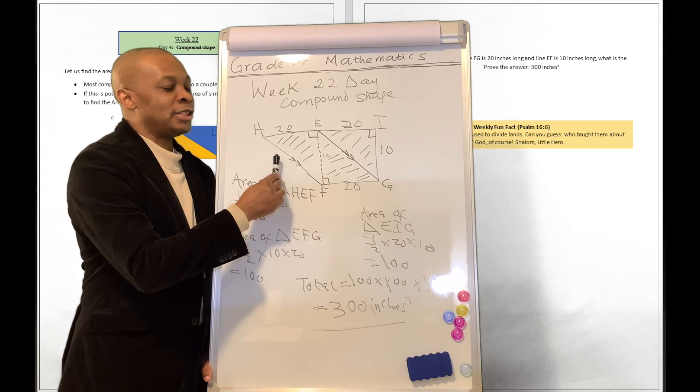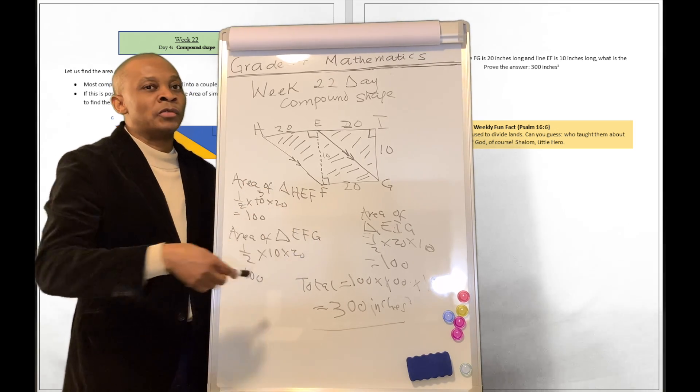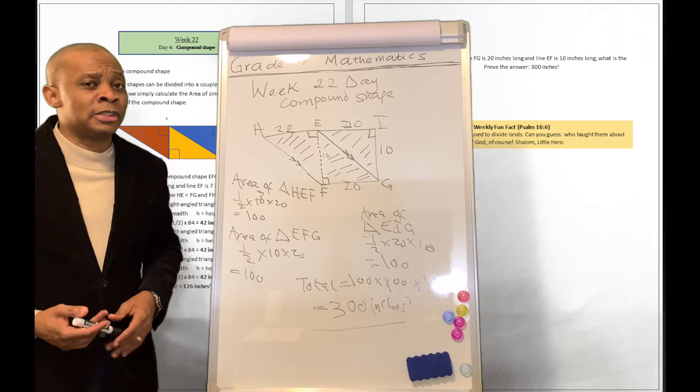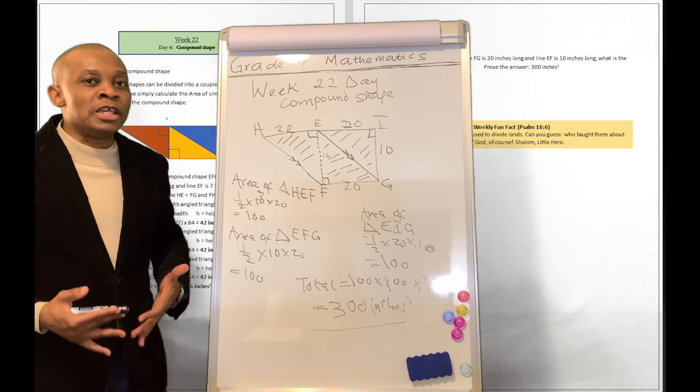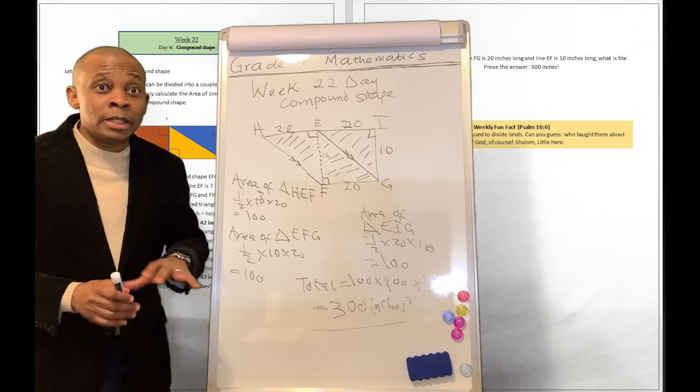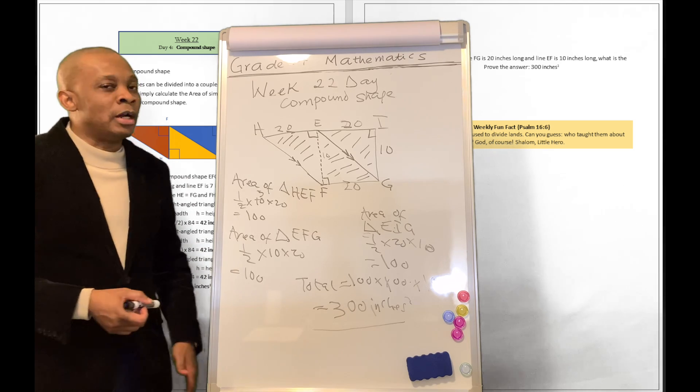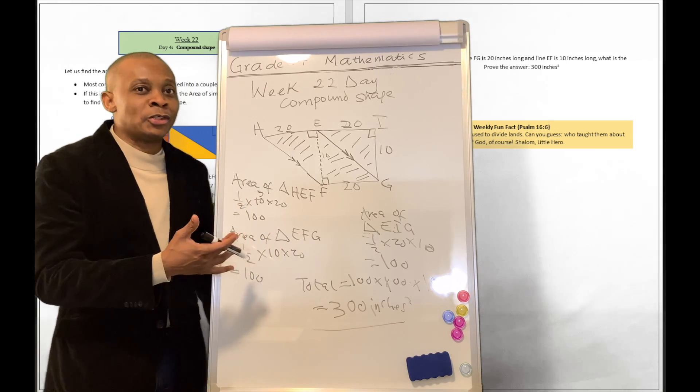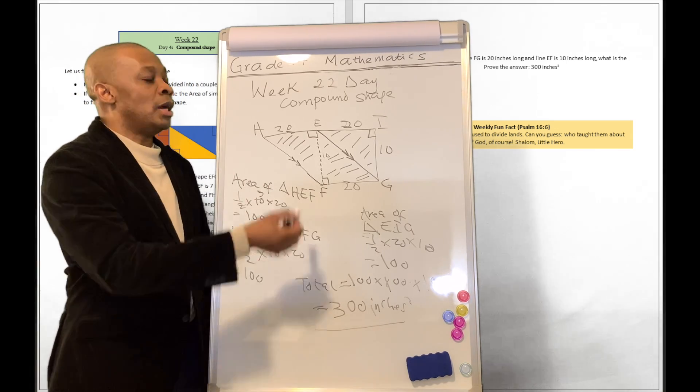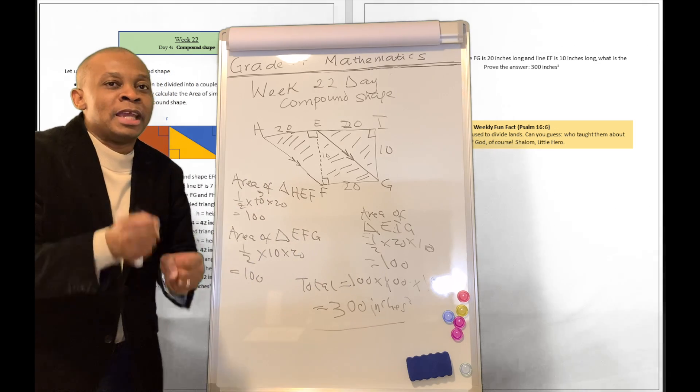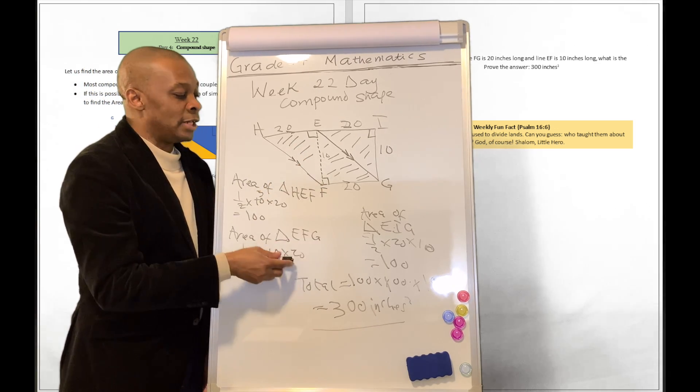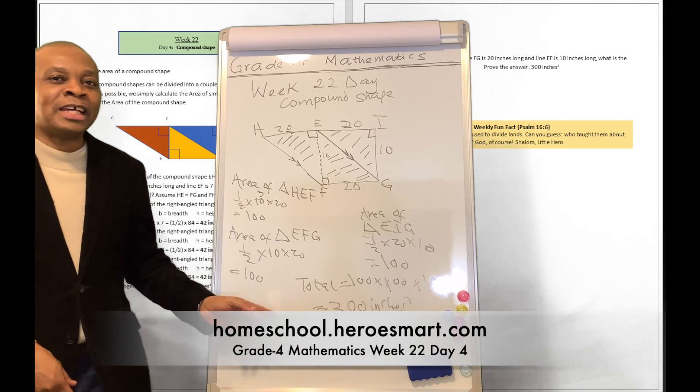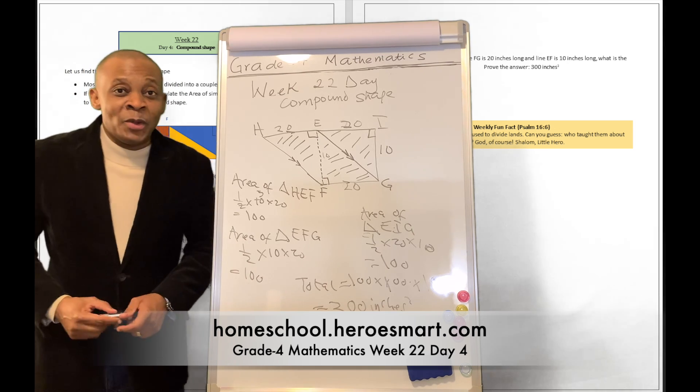Try to break the compound shape in terms of right-angled triangles, sometimes even in terms of squares and rectangles and something like that. They are going to give you that option. If it's not breakable into smaller shapes, they're not going to ask you that question, especially at this age. But if they ask you that question, it means that the compound shape is breakable or can be divided into smaller shapes that you can calculate its area and then you can add it all together. So that's how to do it. Did you get something from it? Hopefully you did.